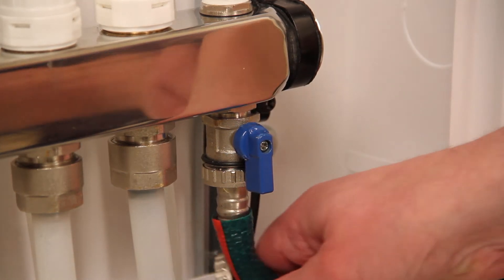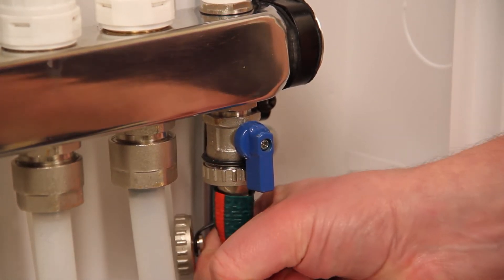The manifold should now be ready to fill the floor heating loop with water and carry out a system pressure test.